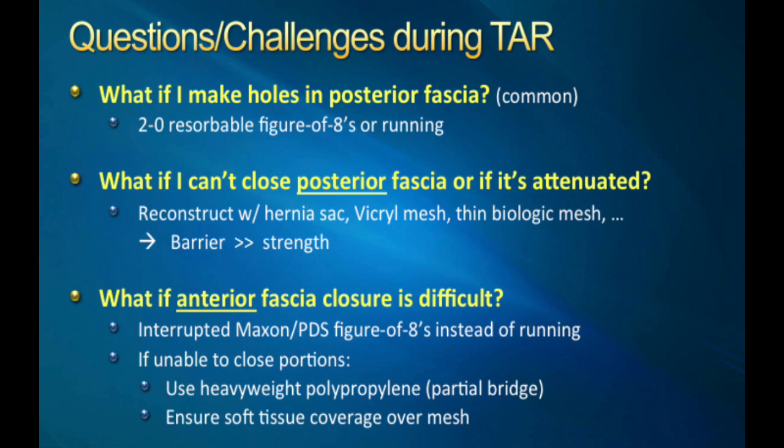What if you can't close your posterior fascia? Perhaps it's a redo retrorectus, or perhaps you had to remove some old mesh that destroyed your posterior fascia. There are several options: if you have some thick hernia sac, you can use some of that to reconstruct your posterior layer. You can use a piece of Vicryl mesh, or you can use a thin biologic mesh to bridge this layer. This posterior layer is not a strength layer — it's more of a barrier between your viscera and the retromuscular mesh, which is your load-bearing strength layer.